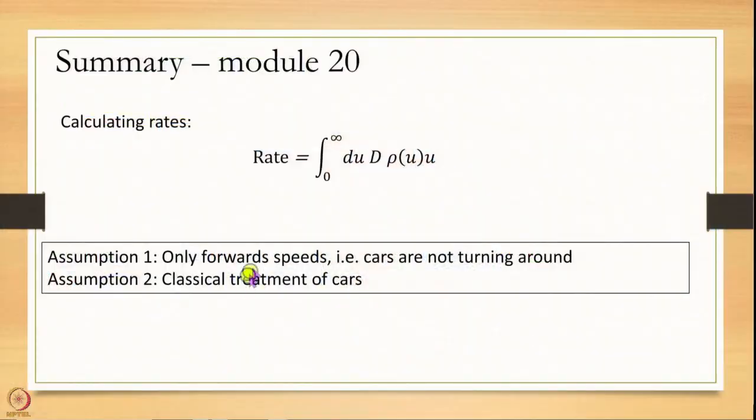In writing this expression we have made two important assumptions. One is only forward speeds — cars are not turning around and coming back. Two is we are treating cars classically — cars are well described by Newton's laws, but atoms and molecules may have exceptions. So this becomes a bit more tricky when you think of atoms and molecules. In quantum mechanics you have to be very careful when using the word speed. Today I just wanted to give you this important expression for the rate. Anytime you calculate a rate, this fundamental expression is used. In the next module we will actually derive transition state theory.